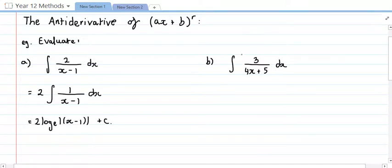This next one's a bit more complicated, though, because even if I take that three out, so let's do that to start off with. So I'll take the three out, and I've got the integral of one over four x plus five with respect to x. This number still isn't the derivative of this. We need it to be a four.